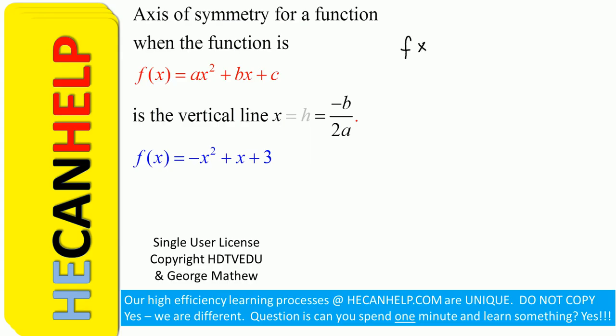So we have the function f(x) = -x² + x + 3, and that is the same as f(x) = -1x² + 1x + 3.